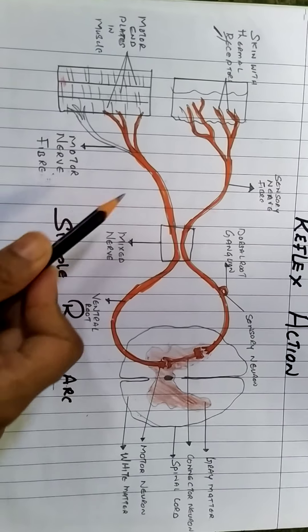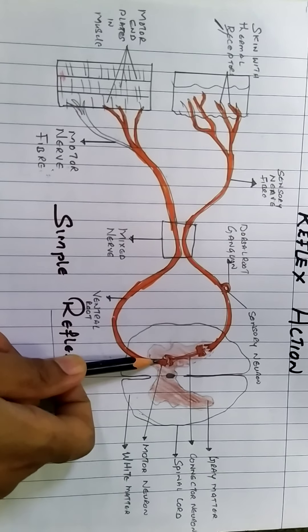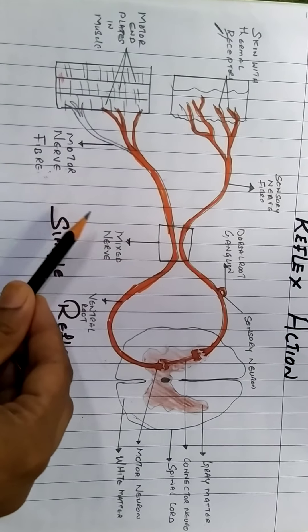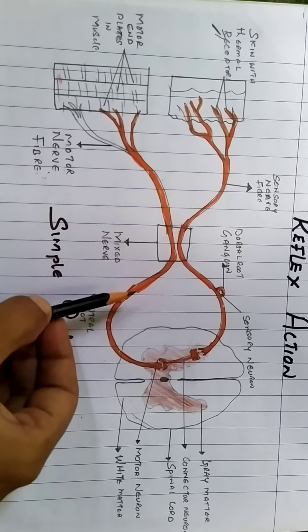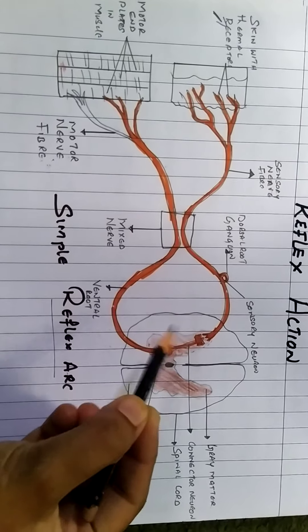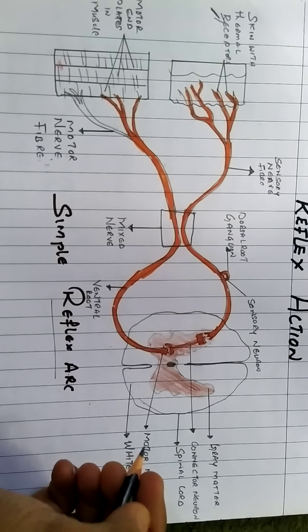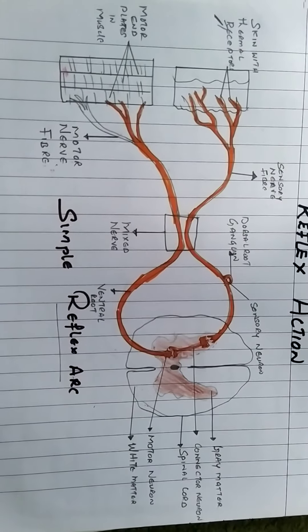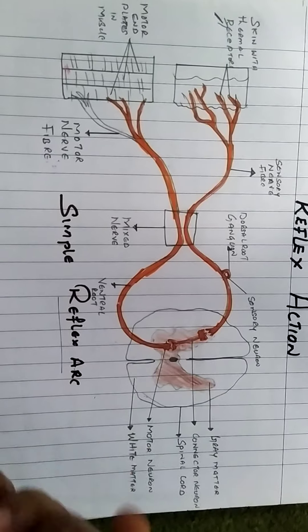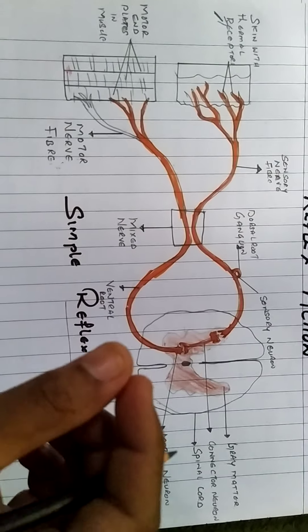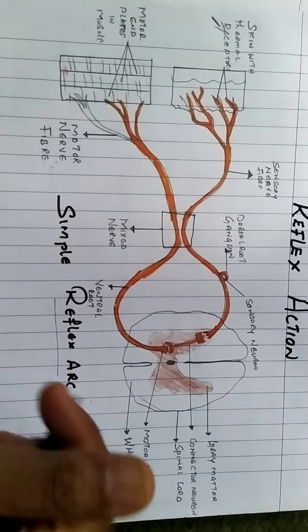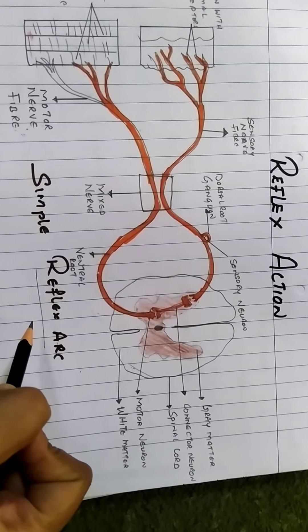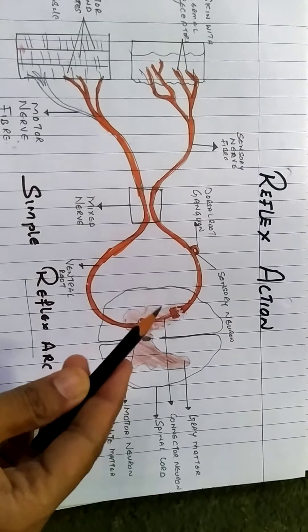Through the association neuron or intermediate neuron, the impulse is passed on to the motor neuron. The motor neuron generates impulses which are transmitted through motor nerve fibers via the spinal nerve to the biceps muscles of the arm. These muscles then contract, pulling the hand away. This entire action is performed in a fraction of a second, without the brain even knowing about the event.